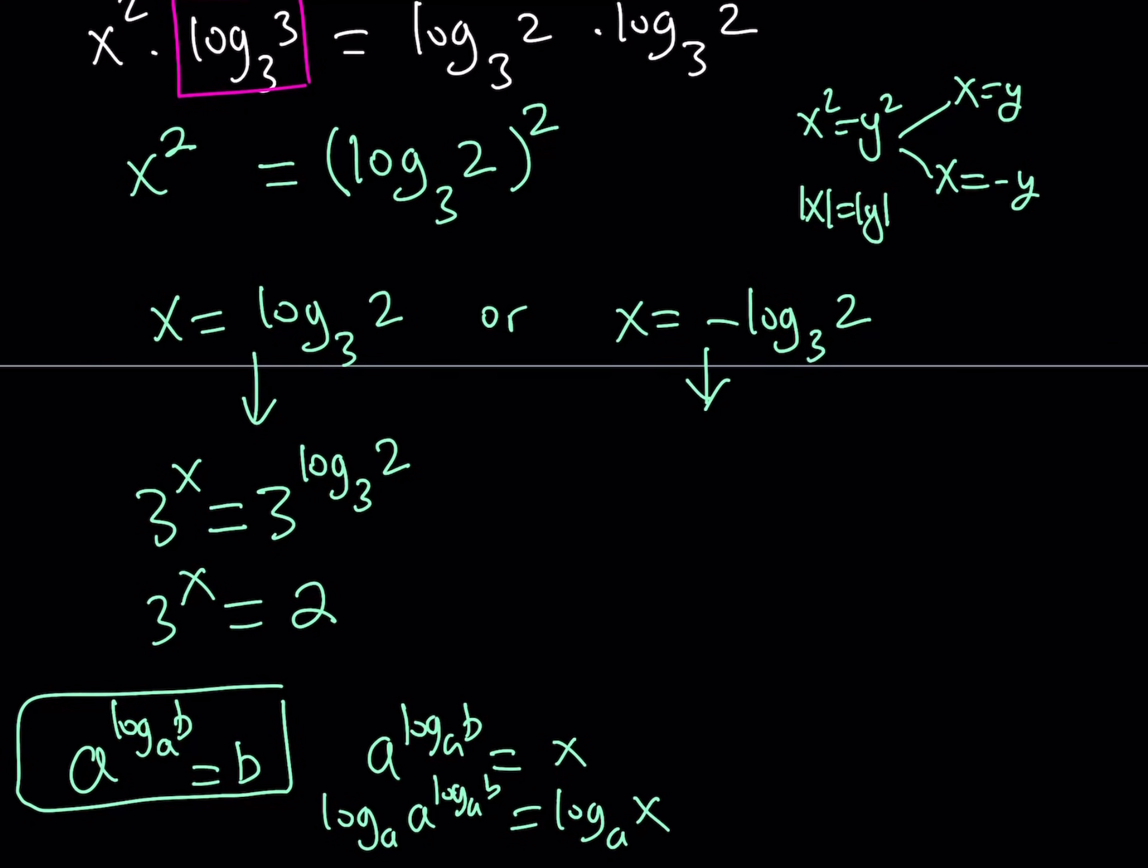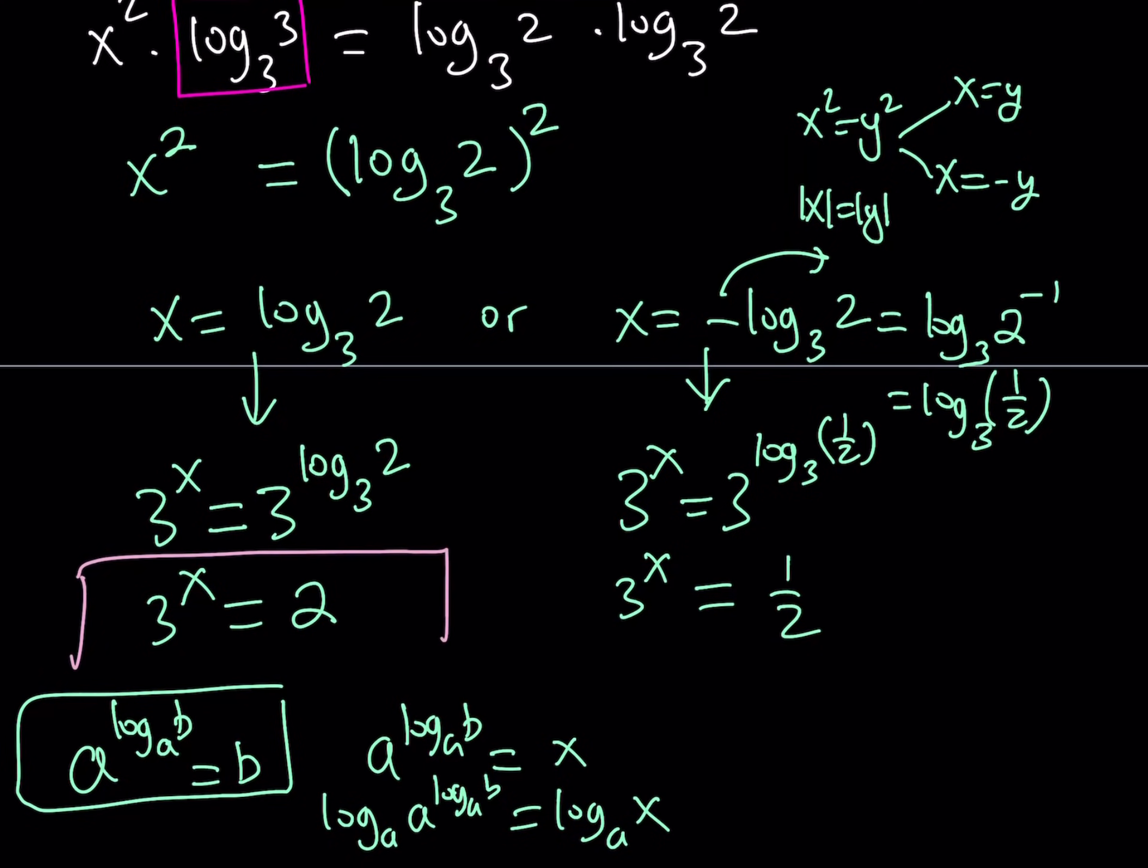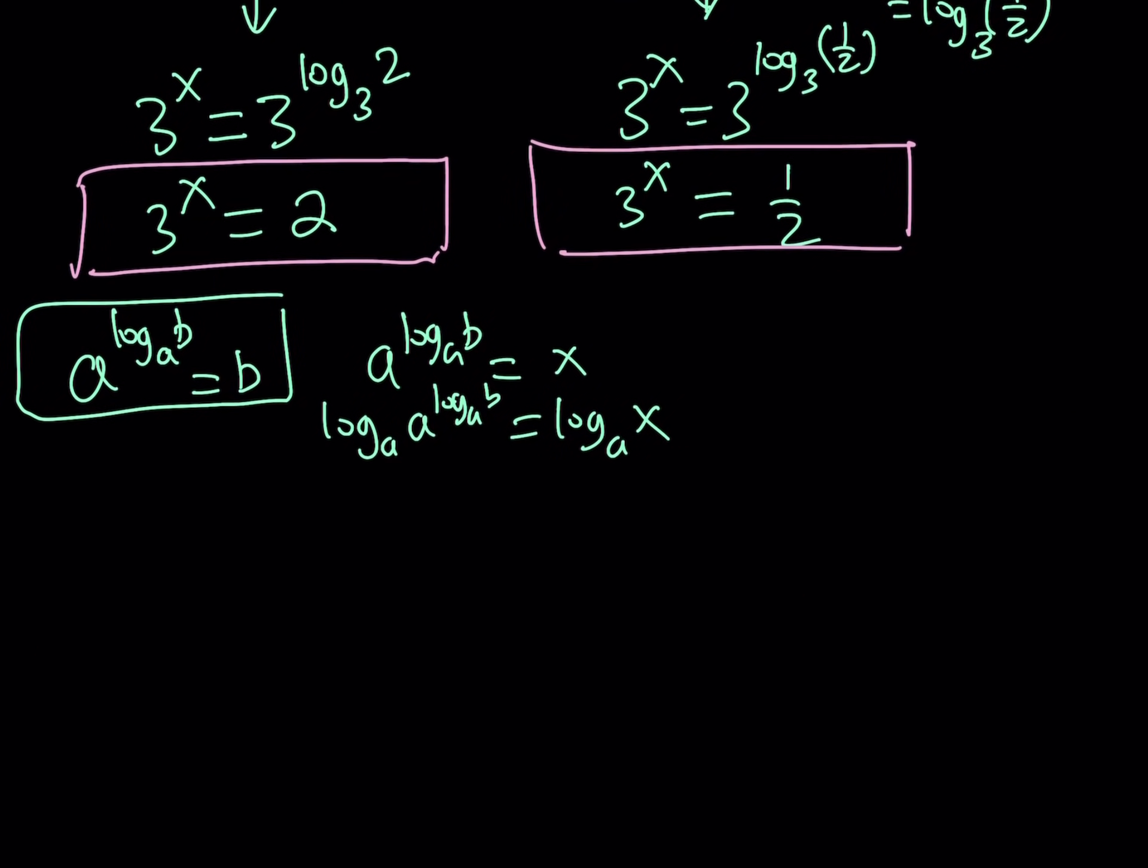Let's take a look at the other one. This one isn't that nice because I have a negative. So why don't we move it back and make it a power. I can write this as log 2 to the power of negative 1 with base 3, which means log 1 half with base 3. Now I can replace x with that, and using the same property of logarithms, this just becomes 1 half. So we're getting two values: 3 to the power x is either 2 or 1 half. And this brings us to the end of this video.